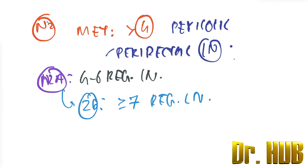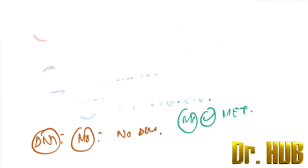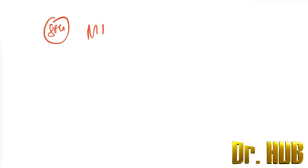Next, we discuss distant metastasis. M0 means there is no distant metastasis. M1 means metastasis is present — this is simply given in the 7th edition. In the 8th edition, there is M1A, M1B, and M1C.